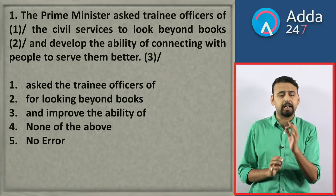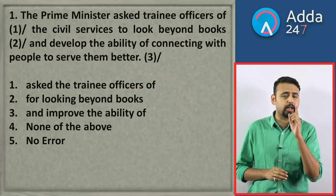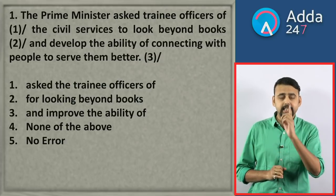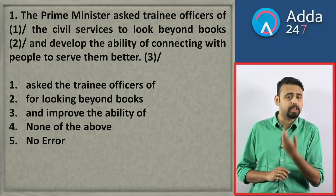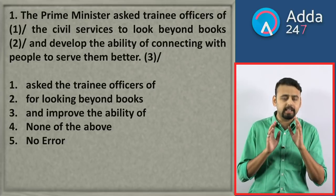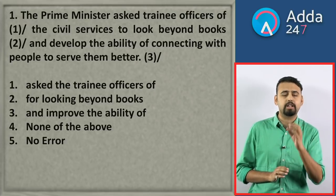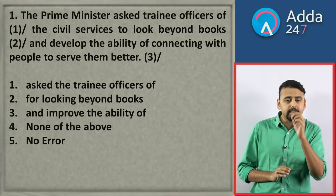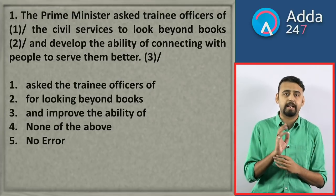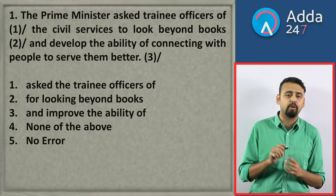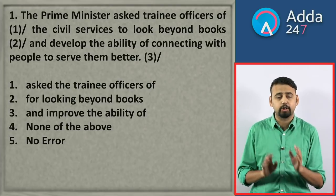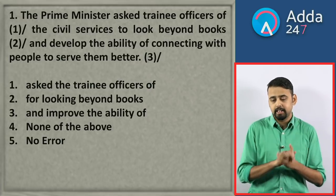You've got one statement divided into three parts. The question is: in which of these three parts is there a mistake? And what is the correction for that mistake? Now, if the correction does not match any of the three given options, you will choose option number four — 'none of the above.' And if there is no error at all in the sentence, then we select 'no error.' Okay guys, start spotting the error.